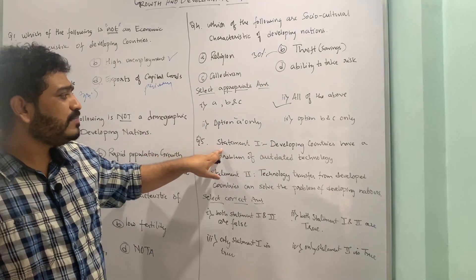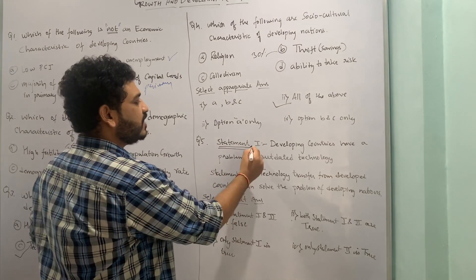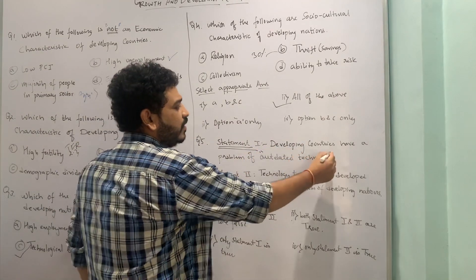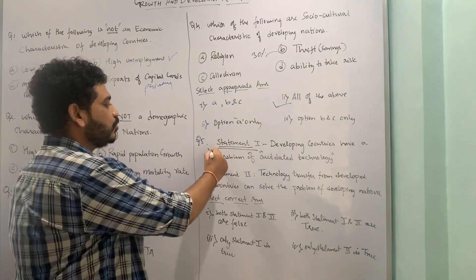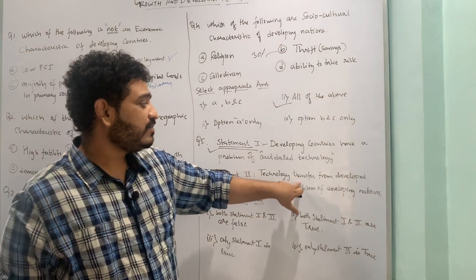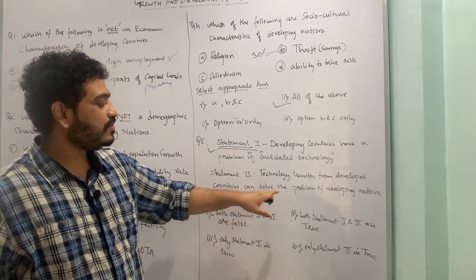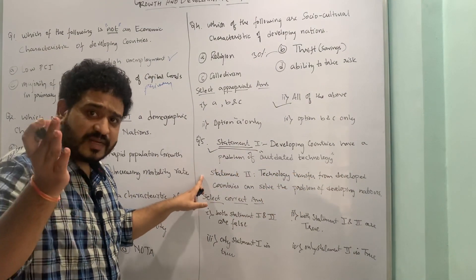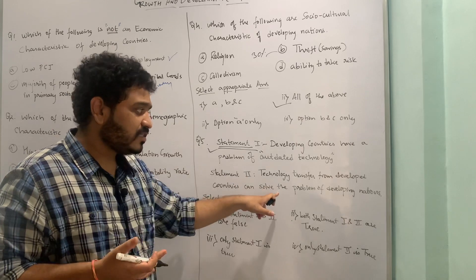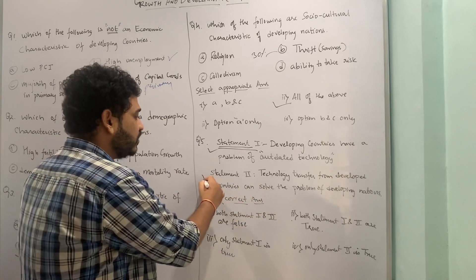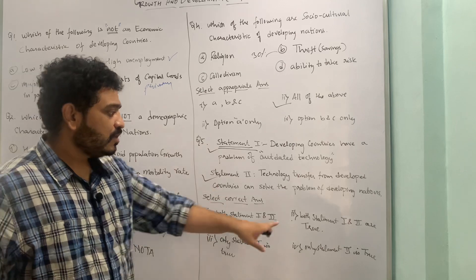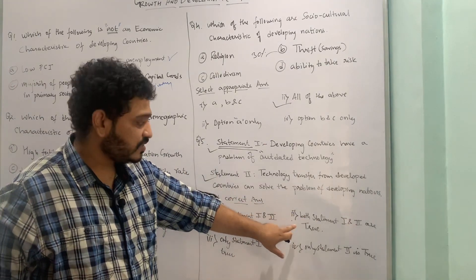The fifth MCQ presents two statements. Statement one: developing countries have a problem of outdated technology — this is true. Statement two: technology transfer from developed countries can solve the problems of developing nations — if a developed nation is willing to provide new technology, it will indeed help. So this is also true. The correct answer is: both statement one and two are true.